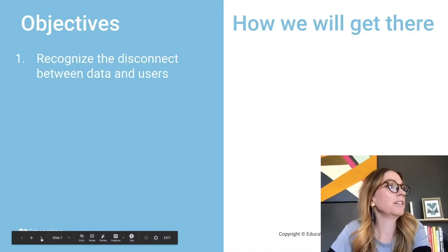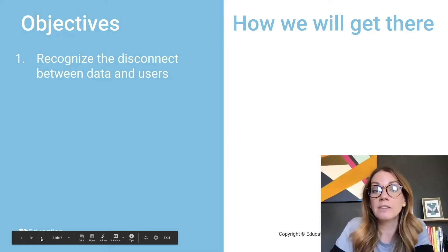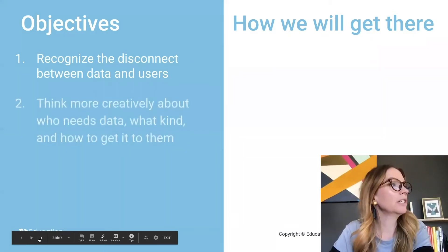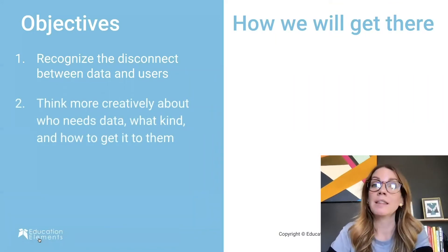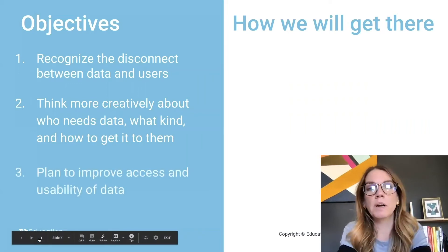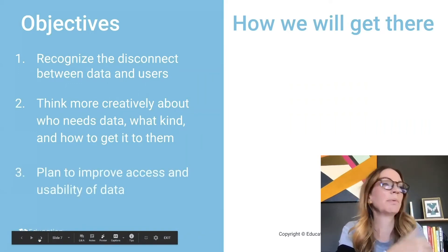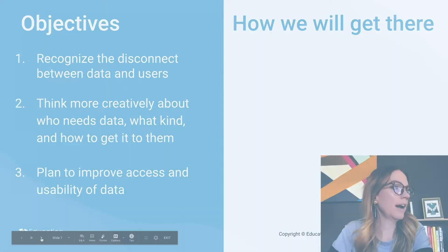The first is recognizing that there is a disconnect between data and users. We also want to think more creatively about who needs data, the kind of information they need, and how we can get it to them specifically. And then we want to save some time at the end to plan to improve access and usability of information, and we'll give you some resources for how to do that.